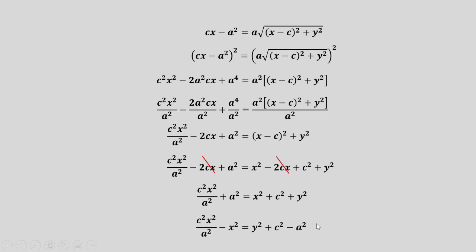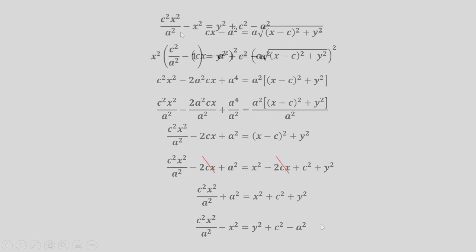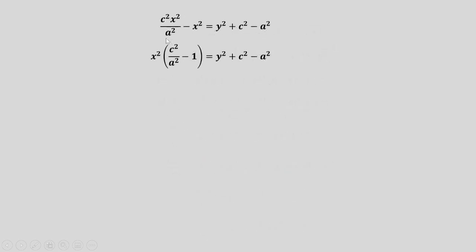Rearranging the terms gives us this equation. Notice that for the first two terms of our equation, our common monomial factor is X squared. So we can express the left side like this, and then performing the operation inside the parenthesis gives us this one.